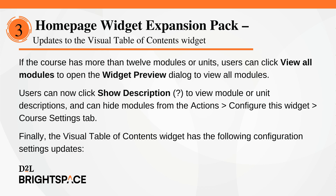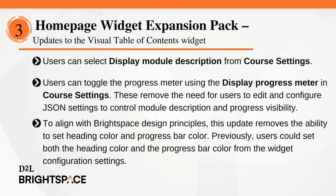The Visual Table of Contents widget has the following configuration settings updates. Users can select Display Module Description from Course Settings. Users can toggle the Progress Meter using Display Progress Meter in Course Settings. These two updates remove the need for users to edit and configure JSON settings to control module description and progress visibility. To align with Brightspace Design Principles, this update removes the ability to set Heading Color and Progress Bar Color, which previously could be set from the Widget Configuration Settings.